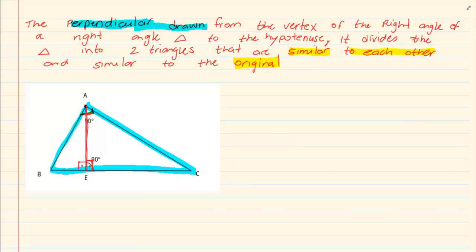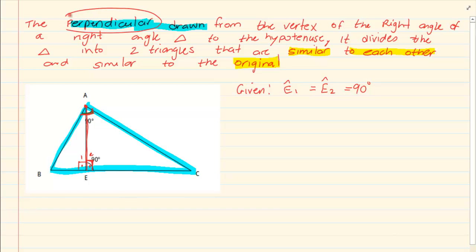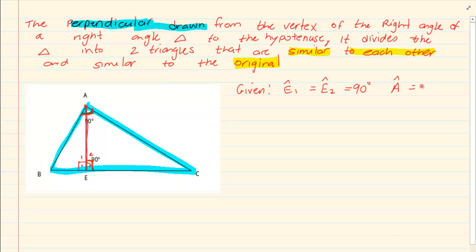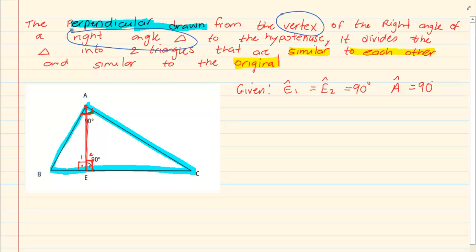To prove this theorem you first have to write down what is given. We are given that E1 equals E2 equals 90 degrees because they tell us perpendicular, so perpendicular means 90 degrees. Then they tell us that angle A (BAC) is also 90 degrees because it is from the vertex of a right angle triangle. What do they want us to prove? They want us to prove that triangle ABC is similar to triangle ABE which is then similar to triangle AEC.